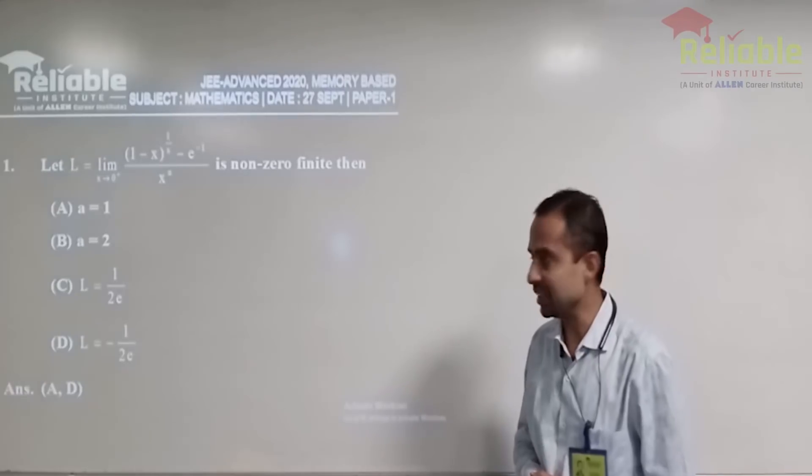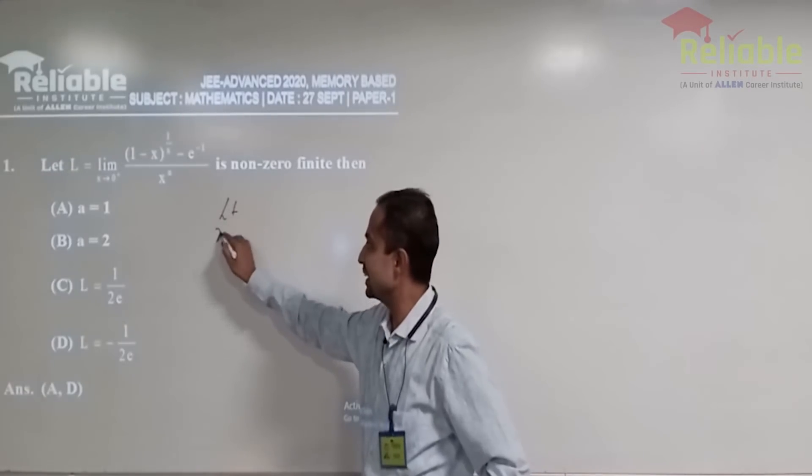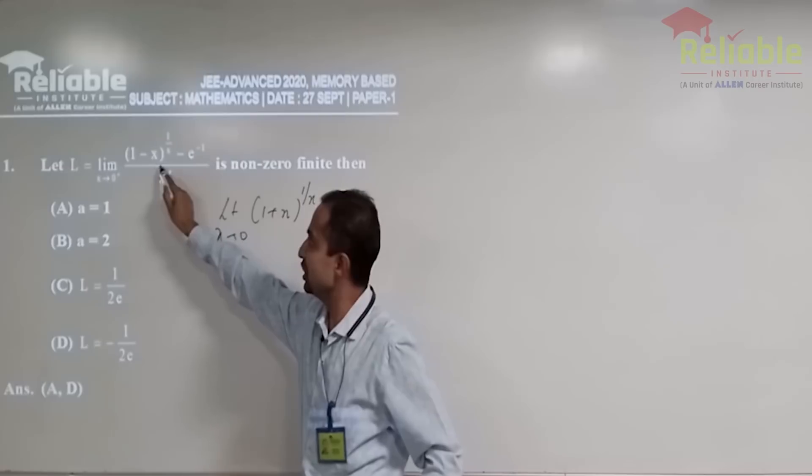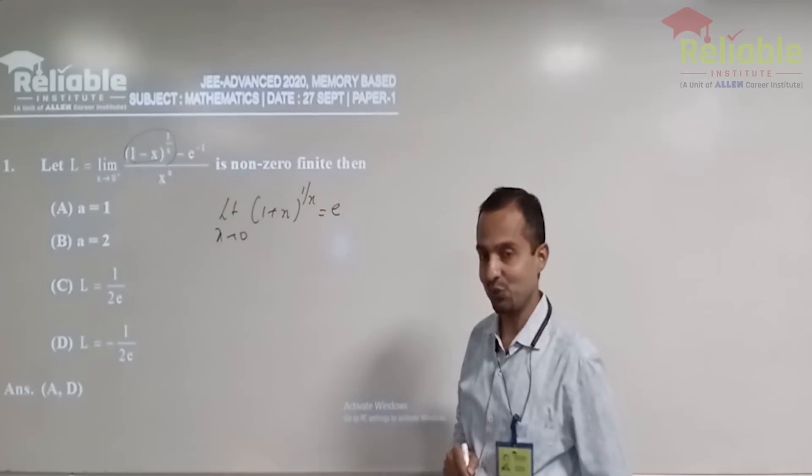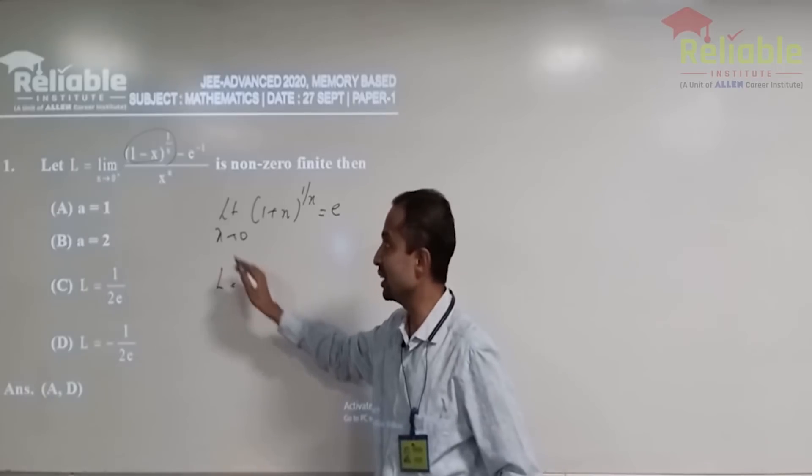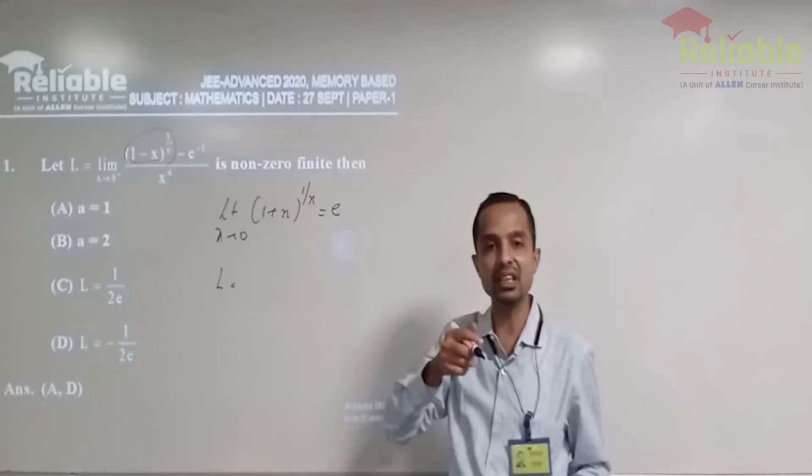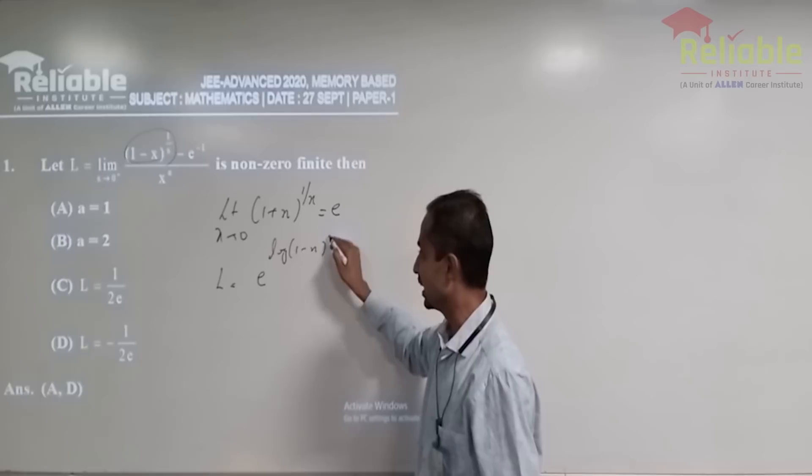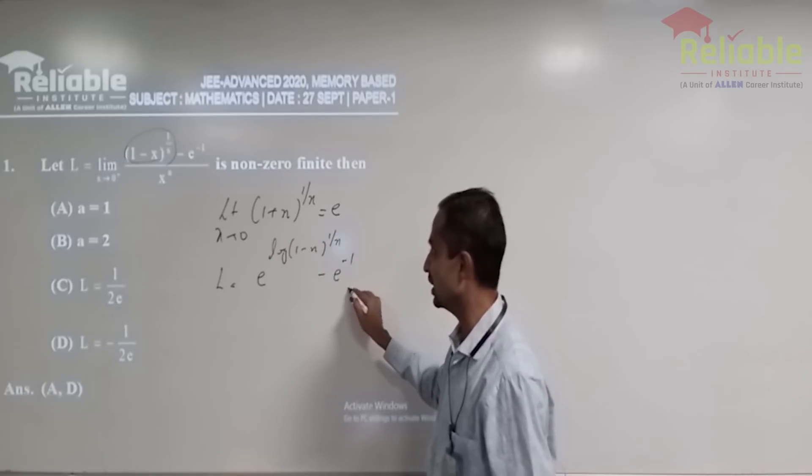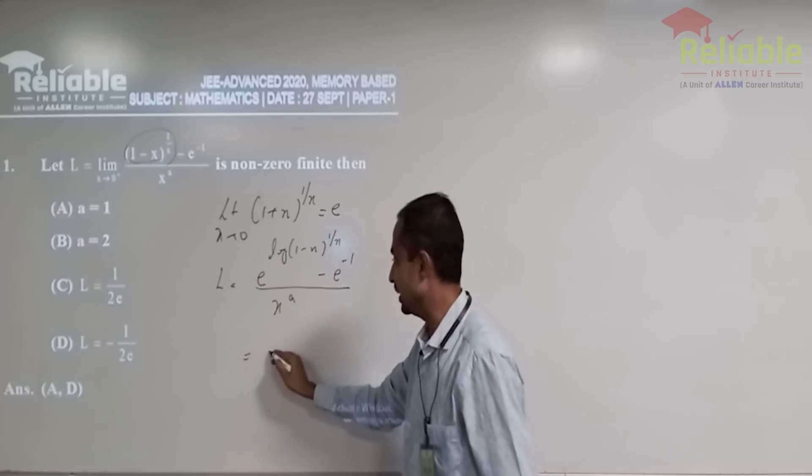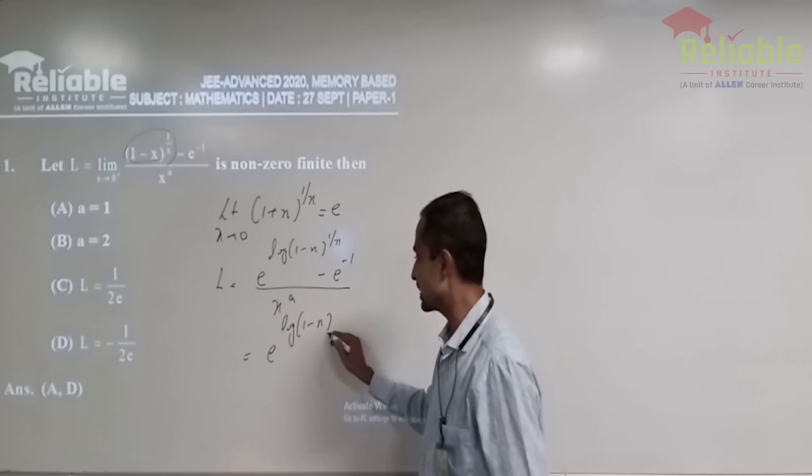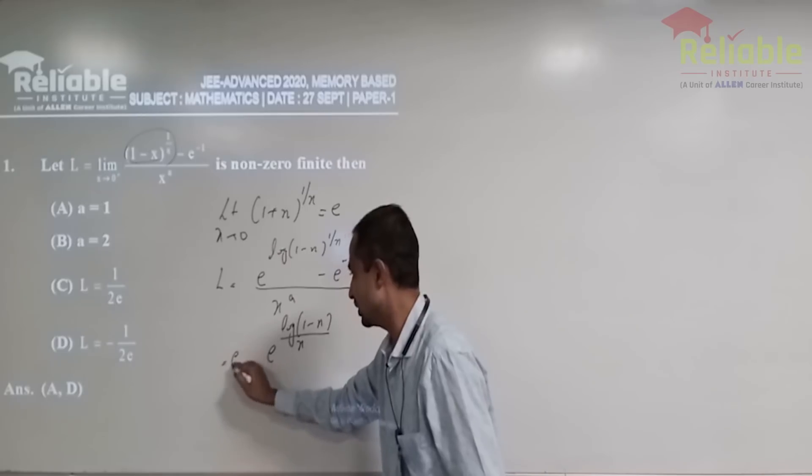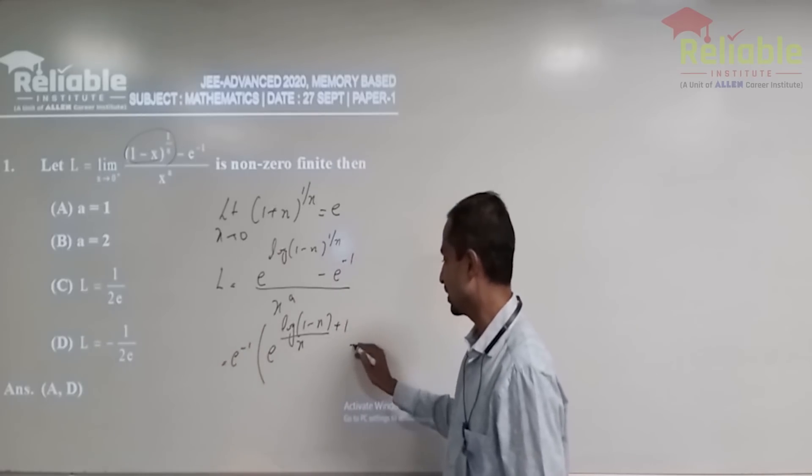Question 1 is from the house of limits. As we know that limit x tending to 0, 1 plus x to the power 1 by x is e. So this is essentially e to the power minus 1, it is 0 by 0 form and I always tell my students that whenever f(x) to the power g(x) form comes, the first thing you should take is e^log. So let us jump with this idea that this is 1 by x minus e^log minus 1 upon x to the power a and then e log of 1 minus x by x and let's take e to the power minus 1 common.